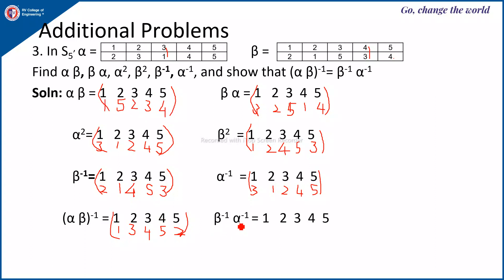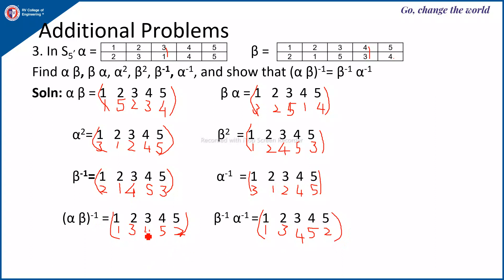Now compute beta inverse times alpha inverse by starting from beta inverse and then applying alpha inverse. For 1: beta inverse sends 1 to 2, alpha inverse sends 2 to 1, so 1 goes to 1. For 2: 2 to 1, then 1 to 3, so 2 goes to 3. For 3: 3 to 4, then 4 to 4, so 3 goes to 4. For 4: 4 to 5, then 5 to 5, so 4 goes to 5. For 5: 5 to 3, then 3 to 2, so 5 goes to 2. You can observe the second rows are the same, showing (alpha beta) inverse equals beta inverse times alpha inverse.